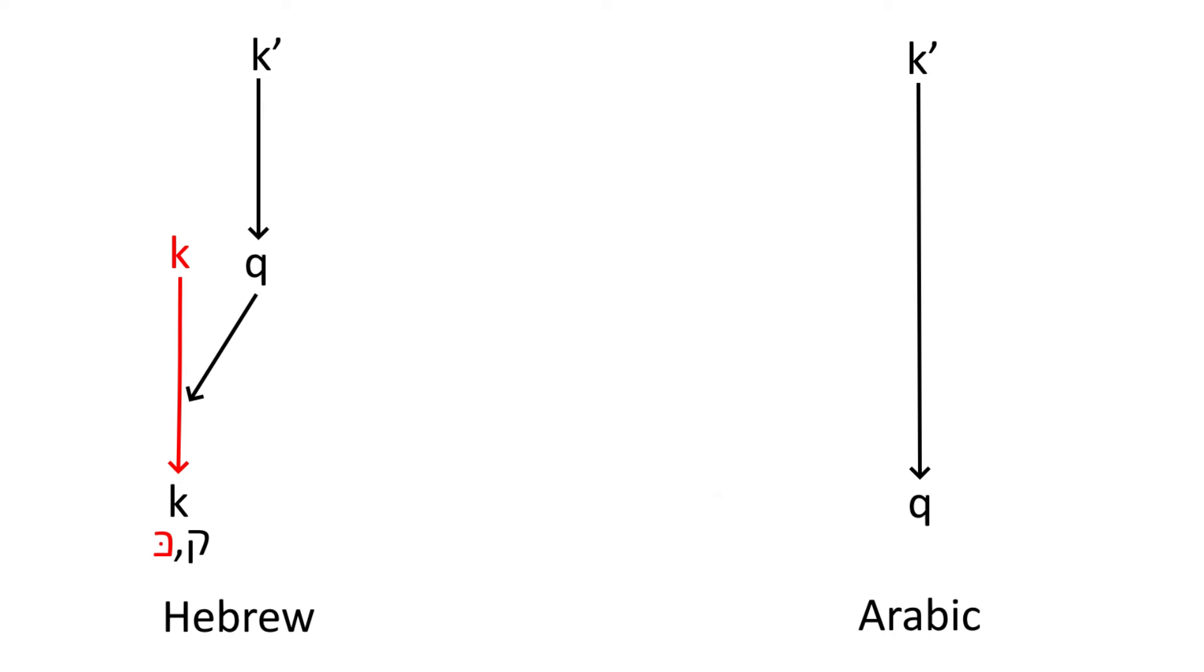In modern Standard Arabic, it is a uvular Q. In Palestinian Arabic and plenty of other Arabic dialects, it merges with the glottal stop in most words. Thus the Arabic name for Jerusalem, Al-Quds, becomes Al-Uds.